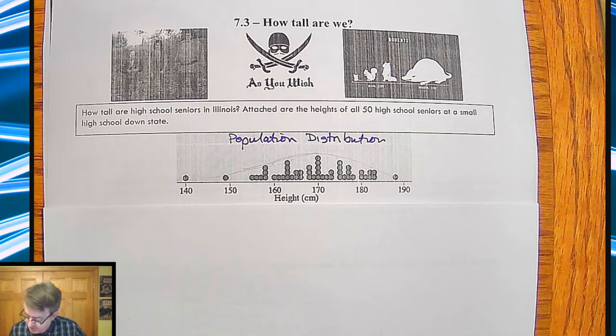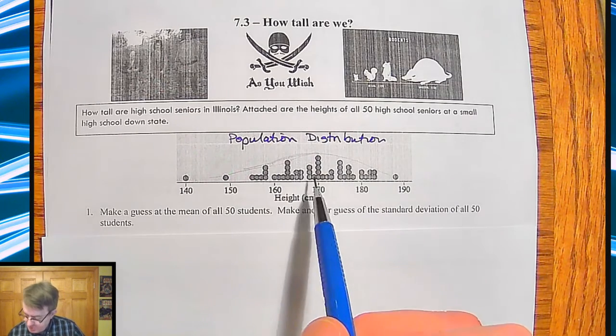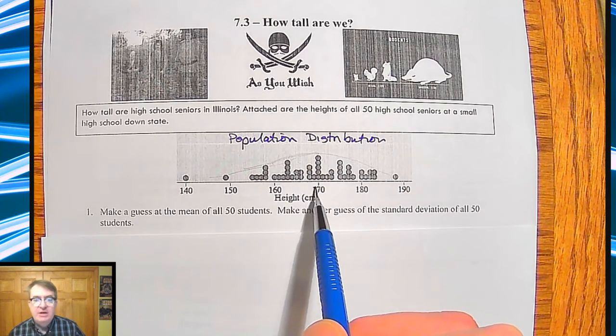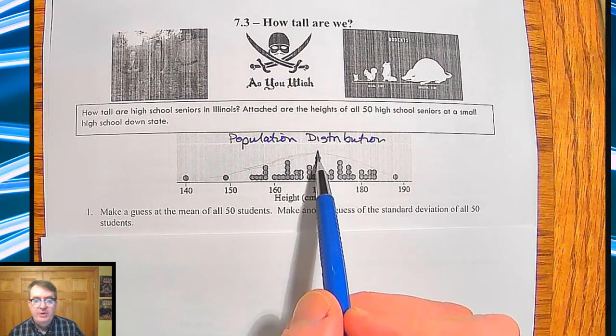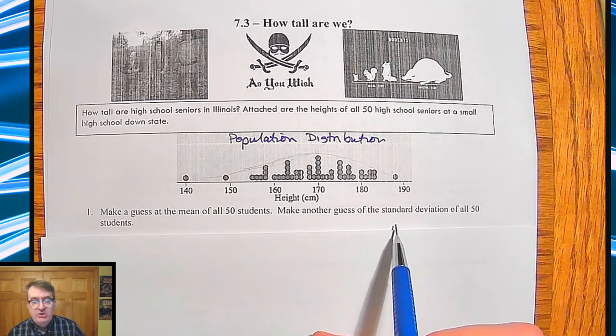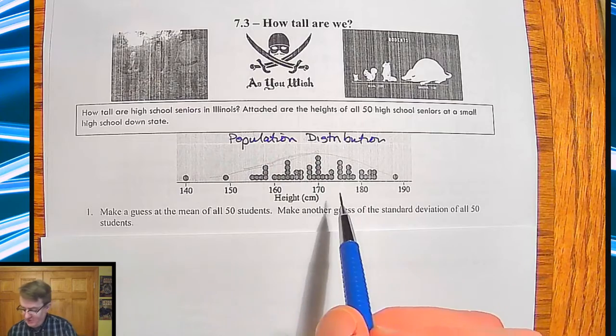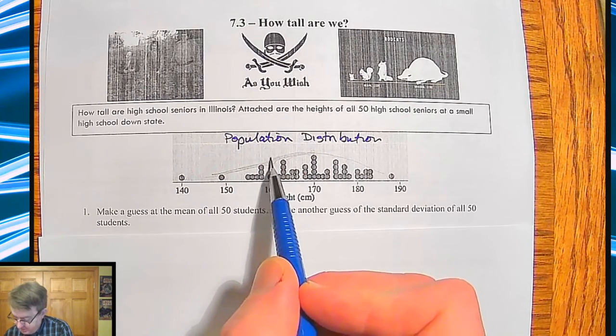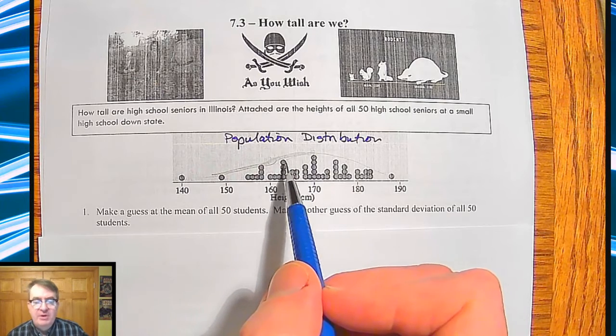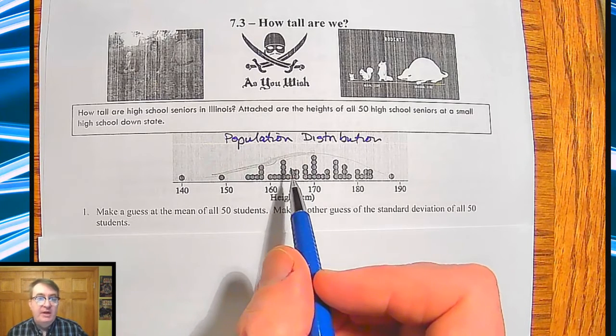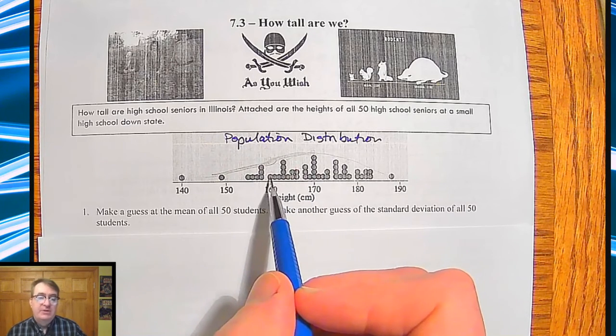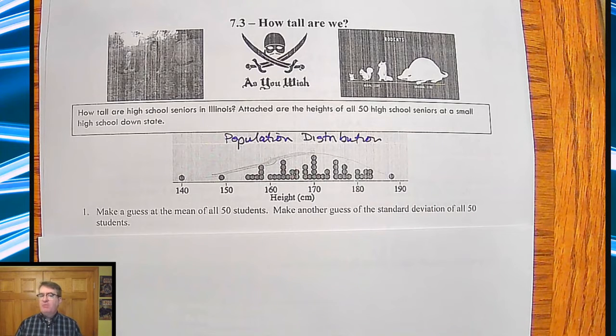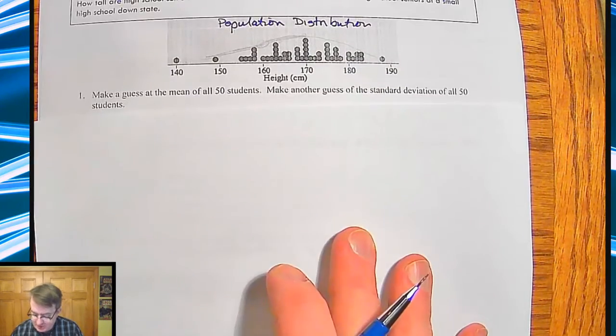Now the first question that you as students would go through is make a guess in terms of all the means. Most of the time people kind of pick right around 170 because obviously that's the tallest one. You can kind of see this as somewhat normal. Standard deviation, like we talked about last time, if you can kind of get a sense of where that inflection point is, that's always where that first inflection being where it goes from concave up to concave down, or concave to convex for you physicists out there, it's about 160. So you could probably say right around 10 centimeters.